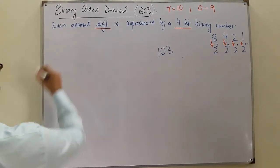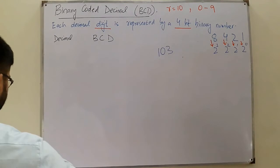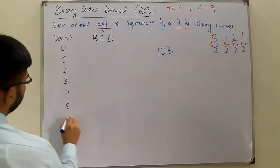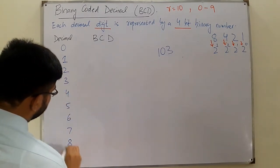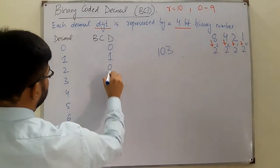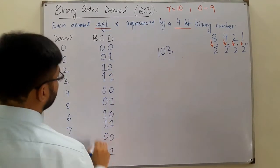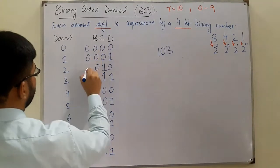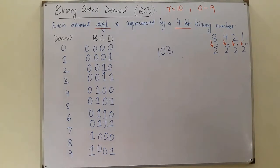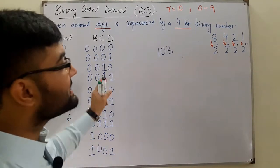So let me write it out — we have the decimal on one side and the BCD on the other. From 0 to 9: 0, 1, 2, 3, 4, 5, 6, 7, 8, and 9 — these are the decimal digits, and we write their BCD equivalents as four-bit binary numbers.